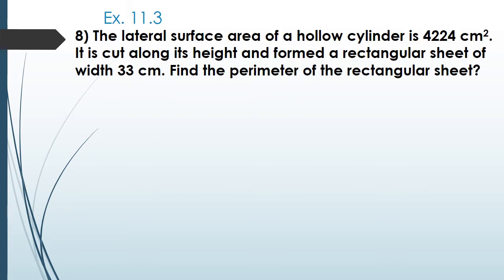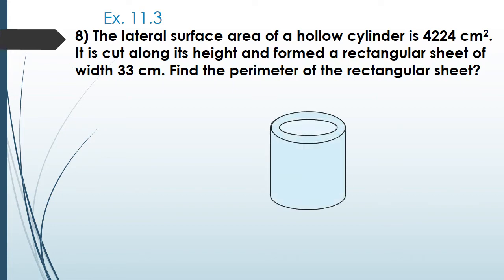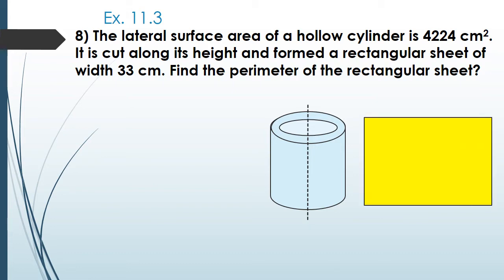Exercise 11.3, question 8: the lateral surface area of a hollow cylinder is 4224 centimeters square. It is cut along its height to form a rectangular sheet of width 33 centimeters. The height of the cylinder and the breadth of the rectangular sheet will be equal, since we are cutting along its height. We want to find the perimeter of the rectangular sheet.